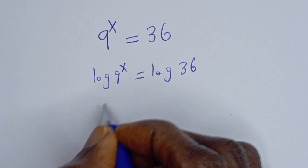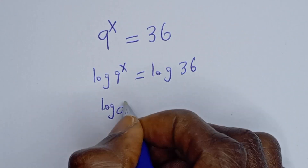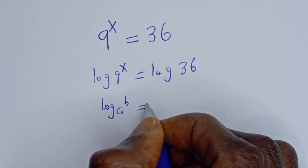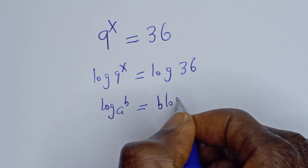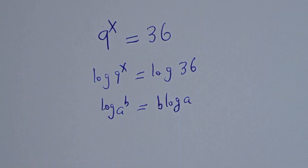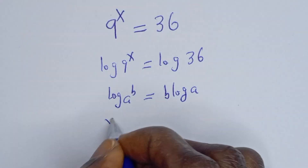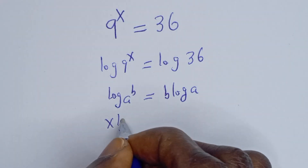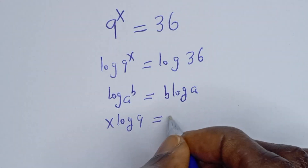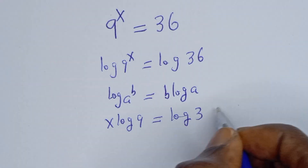Now, if you have log of a to the power of b, this is the same as b log a. Then this can be written as s log 9 is equal to log 36.